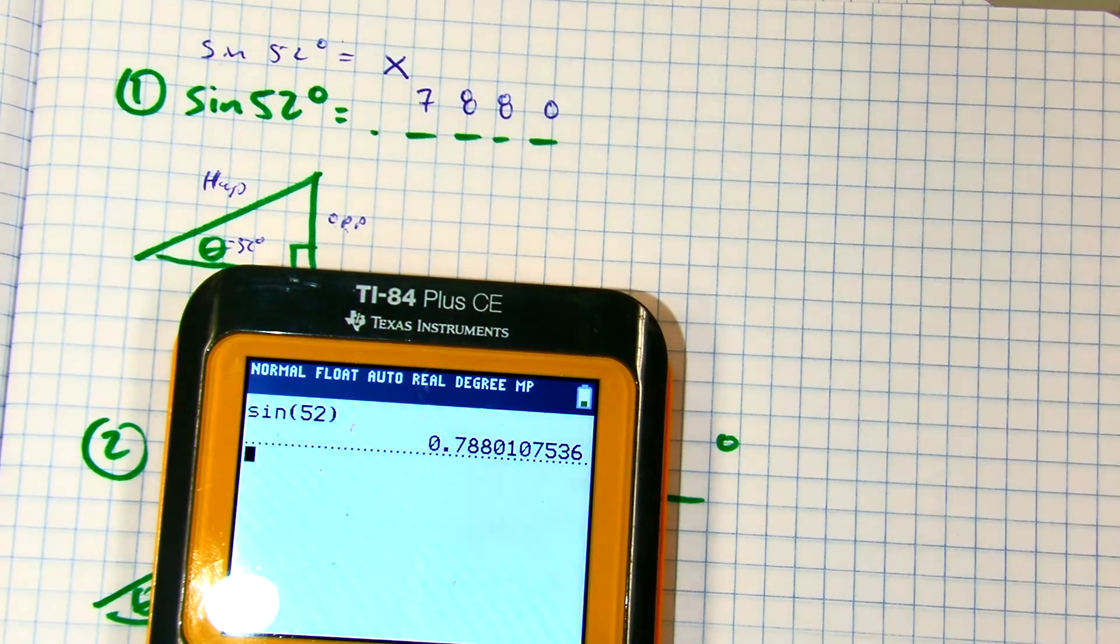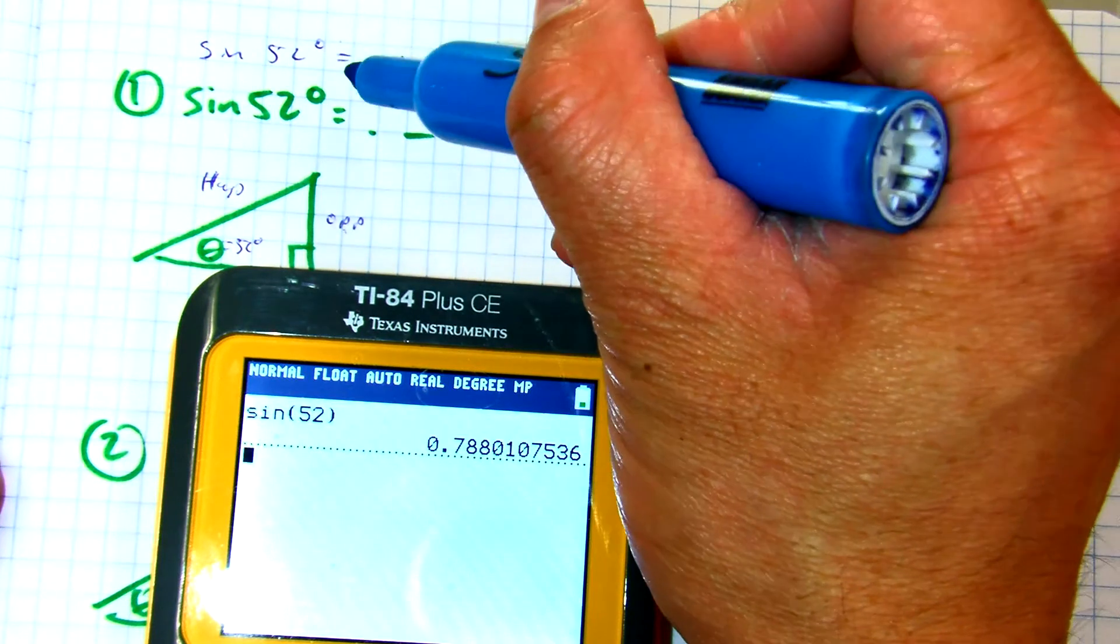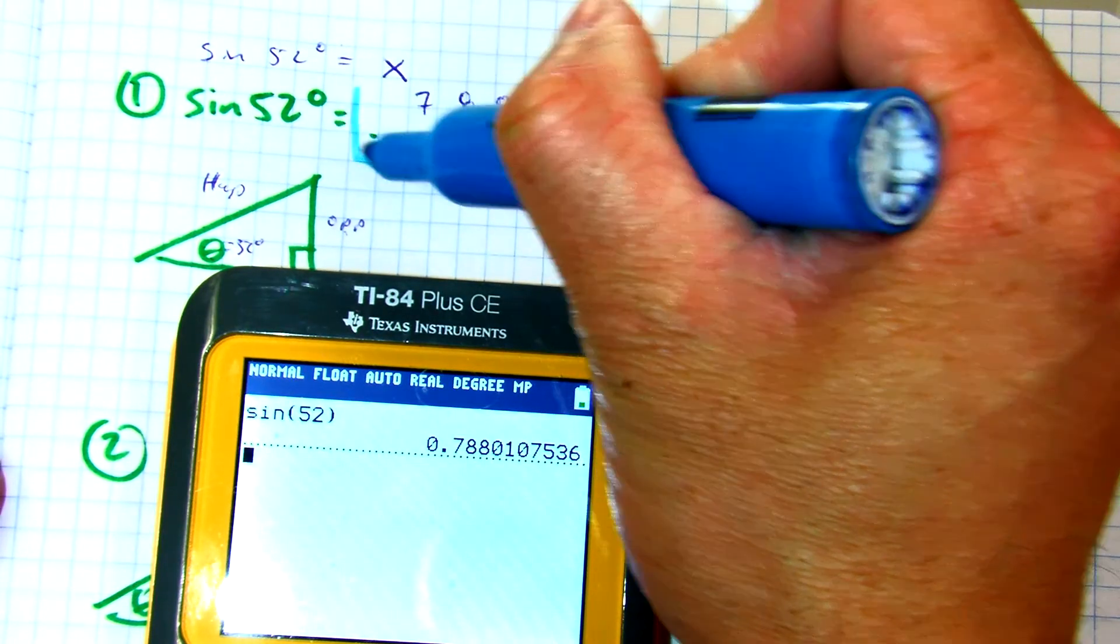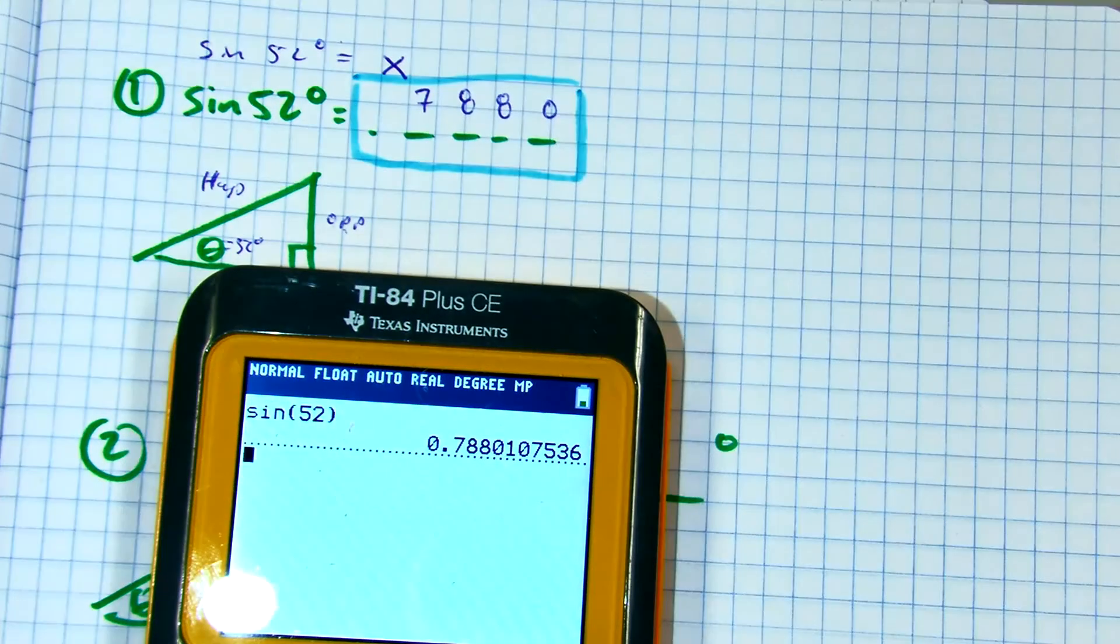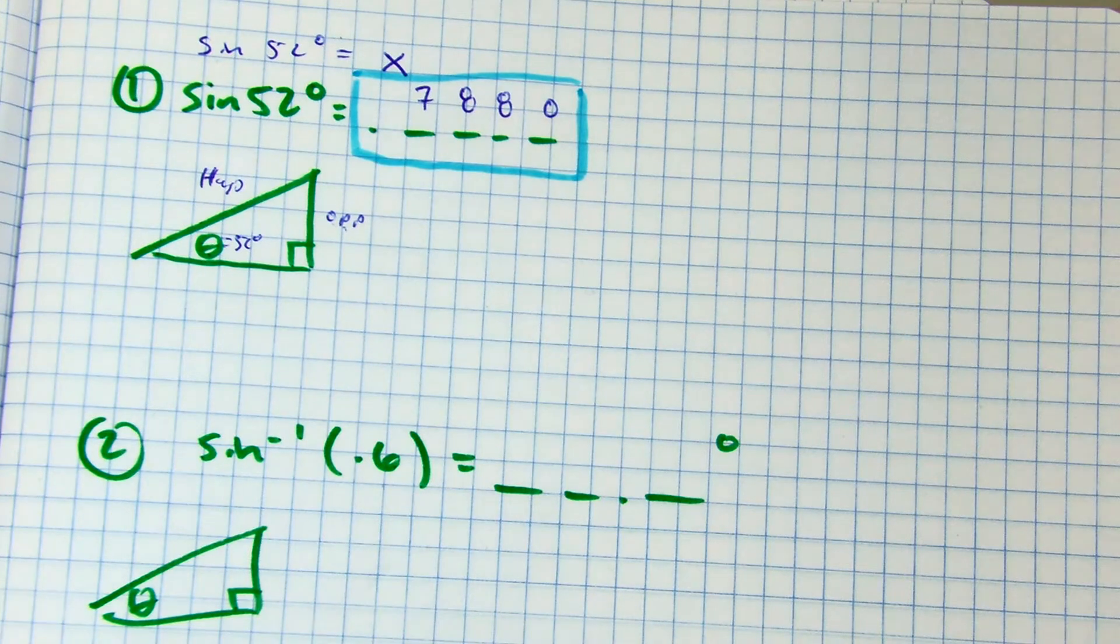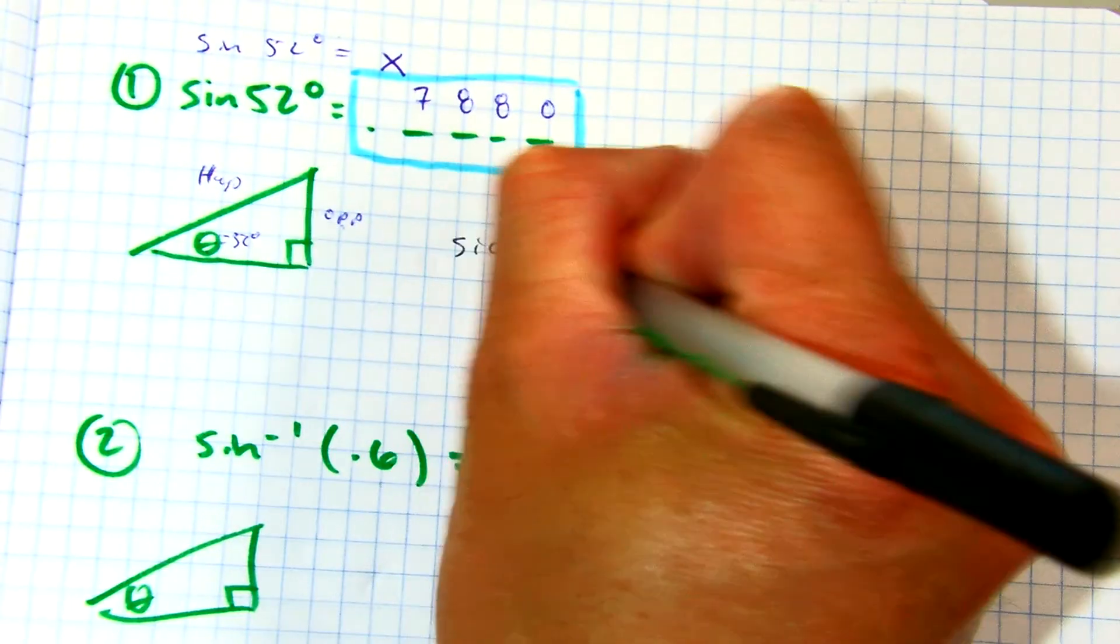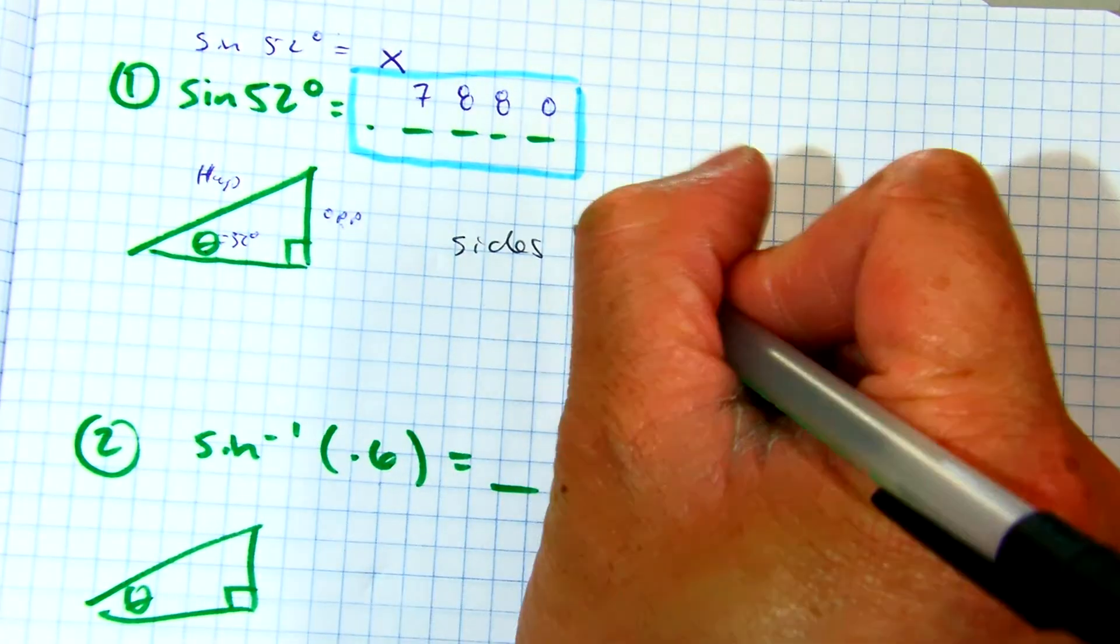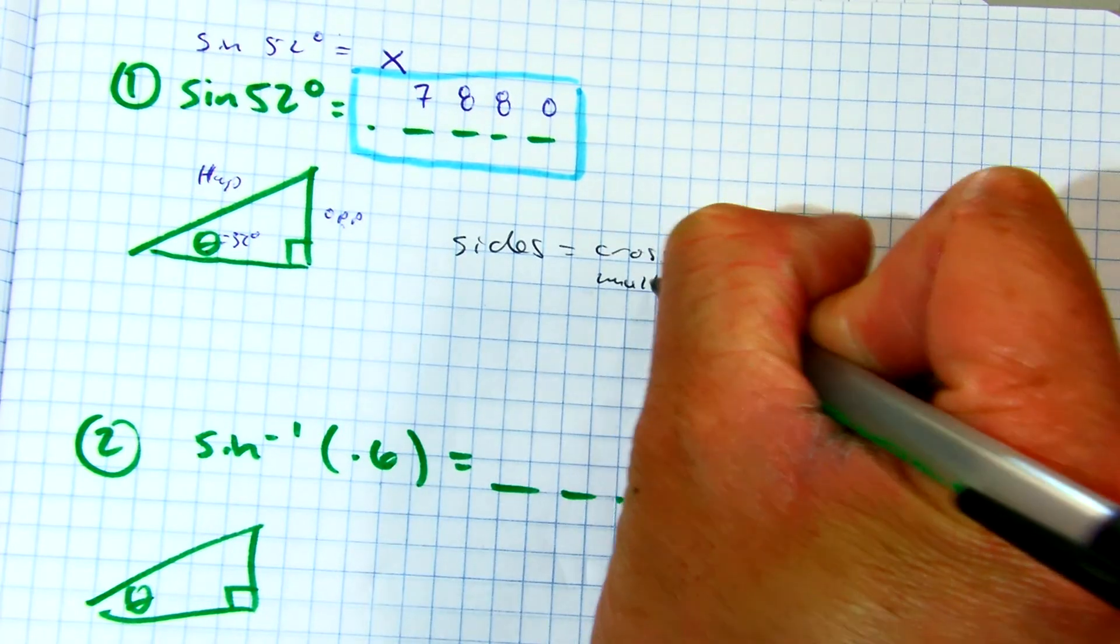So Klaus, if you're finding side lengths, should you cross multiply or take the inverse? Talk to your partner. If you're finding a side length, on the count of three: one, two, three. Cross multiply. Write that down. When you're trying to find side lengths, you should be cross multiplying.